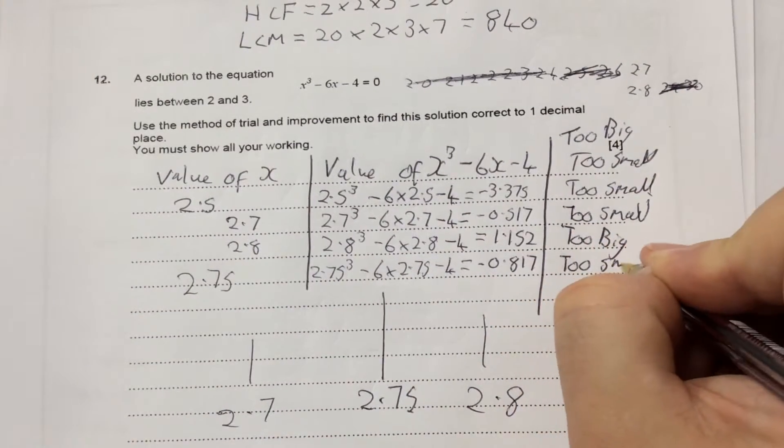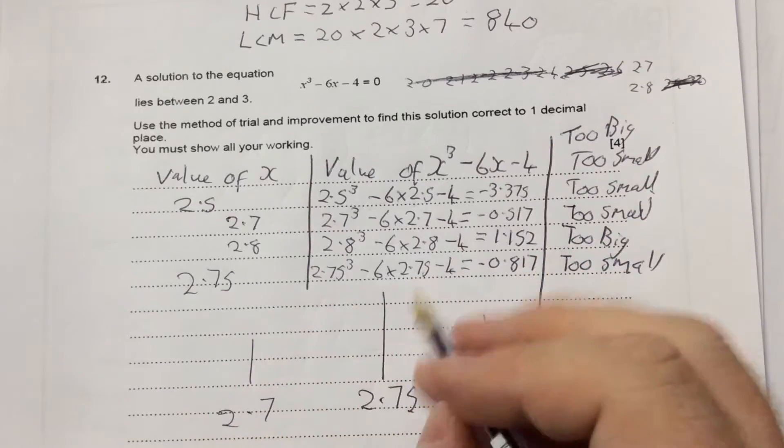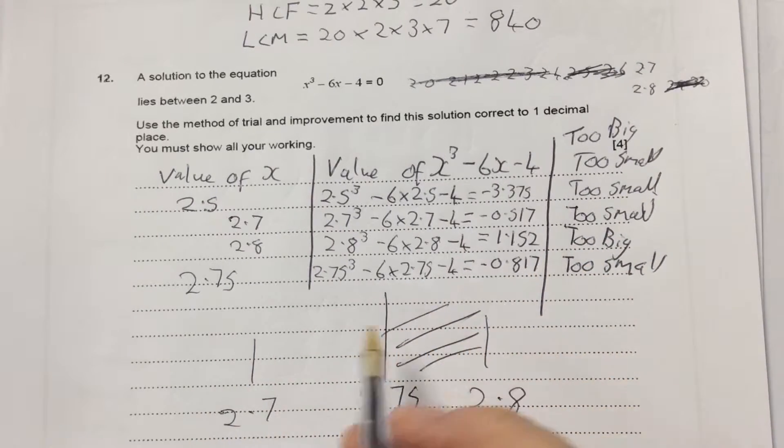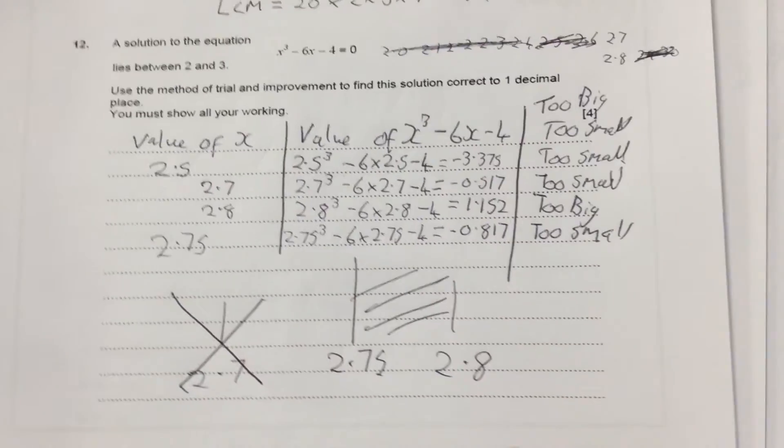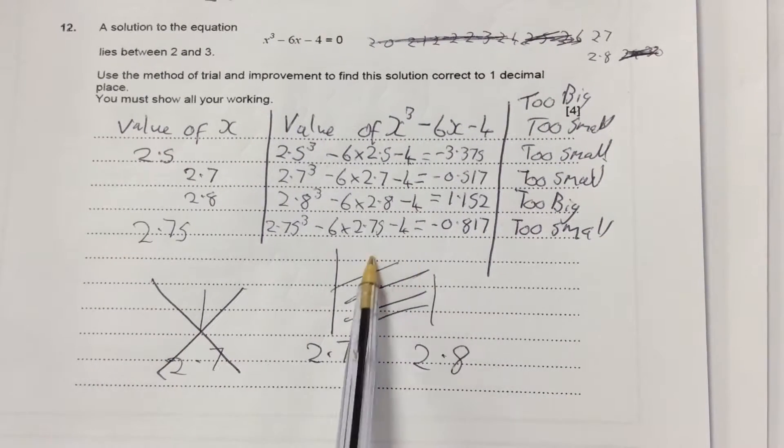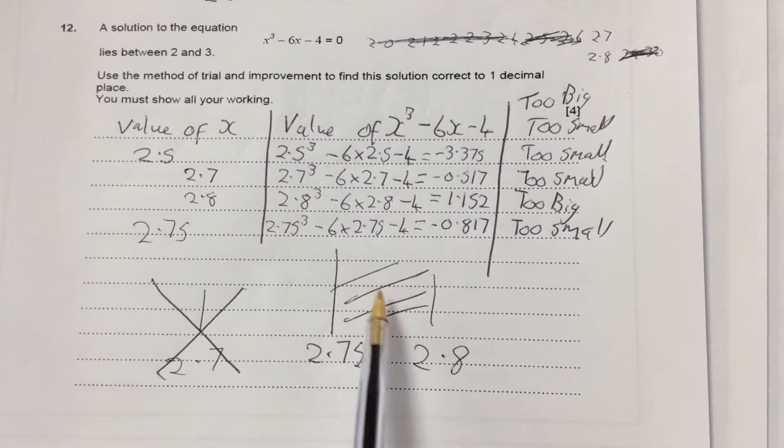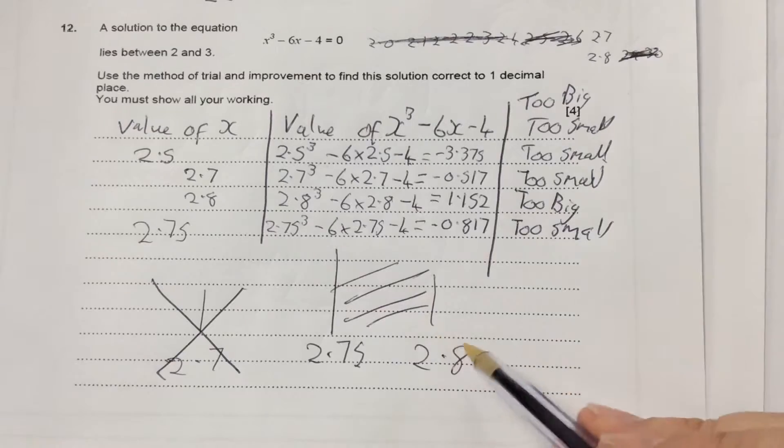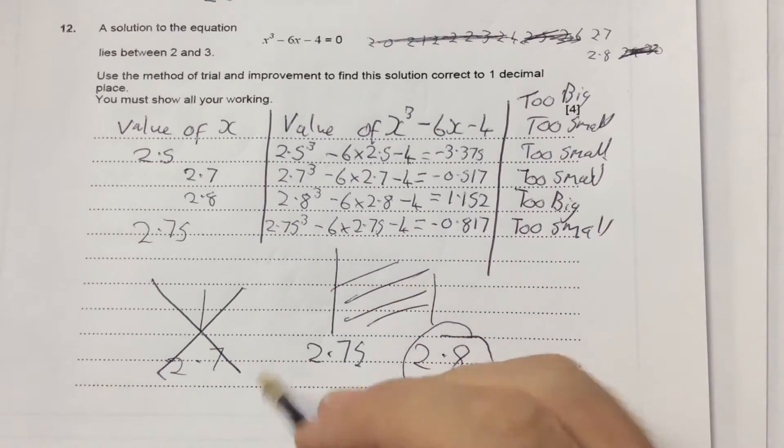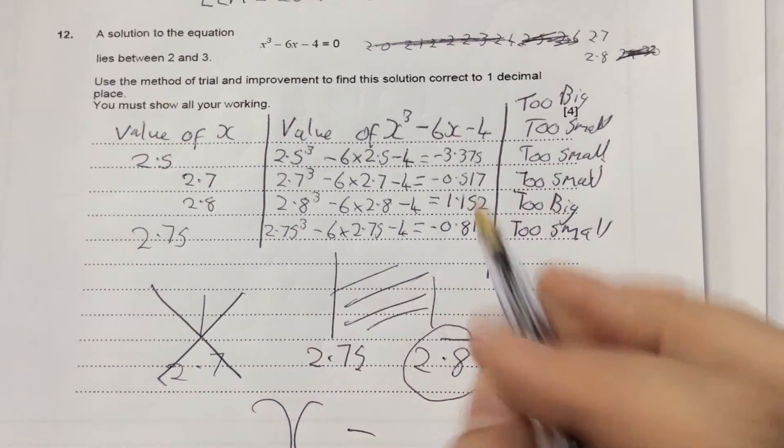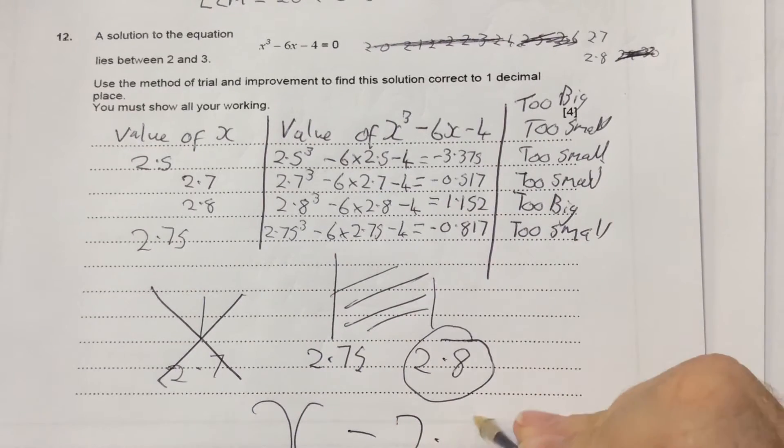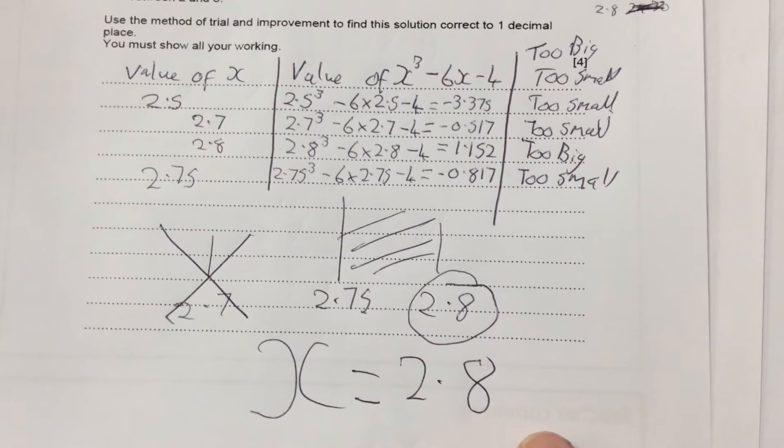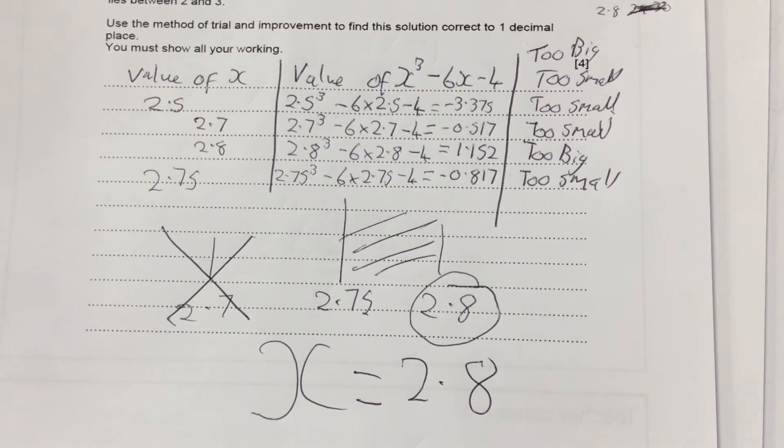So what that tells me is it's going to be this side of the line. It's not going to be 2.7. Because it's that side of the line, I should try 2.76, 2.77. The nearest to one decimal place is 2.8 because they only want it to one decimal place. So the answer to that would be x = 2.8.